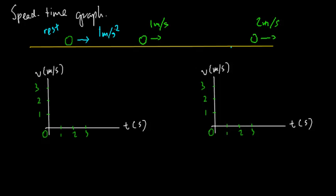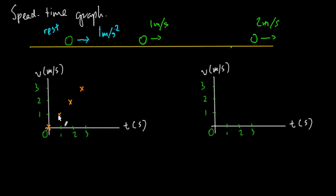I can actually plot the points. In the beginning it's at rest, so zero meters per second. After one second the body is moving at one meter per second, after another second two meters per second — after every second the speed increases by the same amount. So clearly you can see it's going to be a straight line. Next time you see a slanted straight line on a speed-time graph, that means the body is accelerating at a uniform rate.